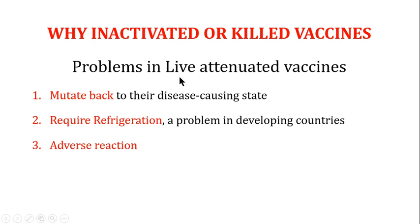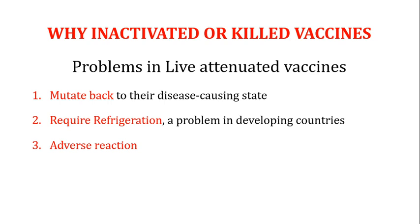The first question is: if we already have live attenuated vaccines, why are we going for the inactivated or killed vaccines? The reason is that there are certain problems in the live attenuated vaccines which compel scientists to look for other options. One problem is that live attenuated vaccines are live organisms that have been attenuated, but they can mutate back to their disease-causing state and cause disease in the recipient.